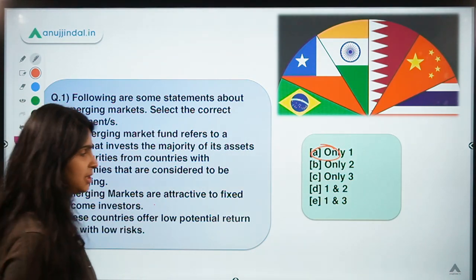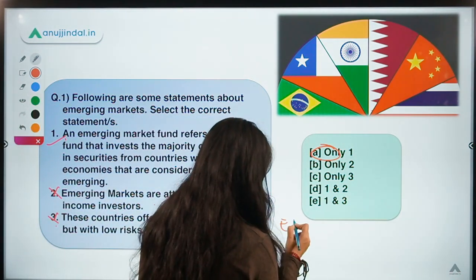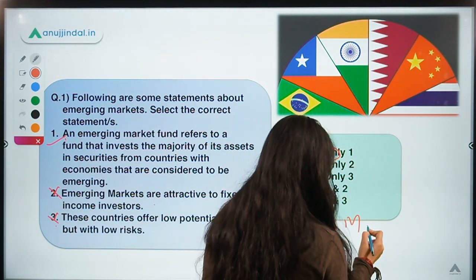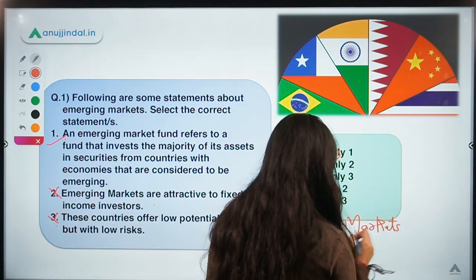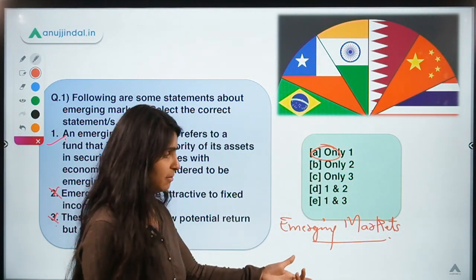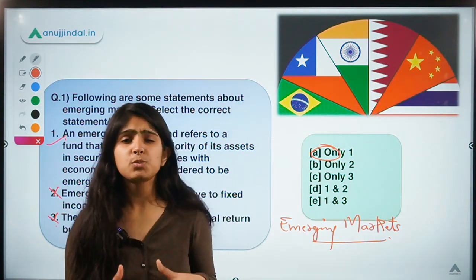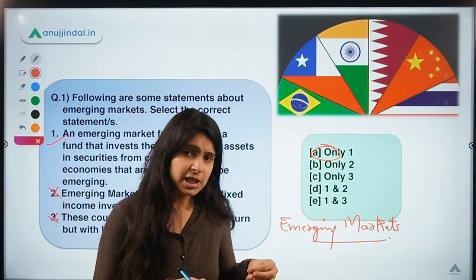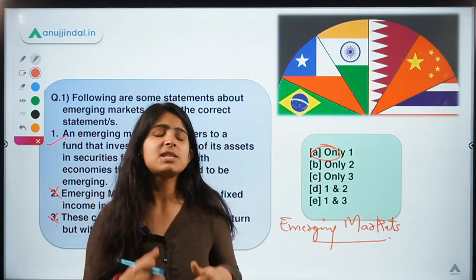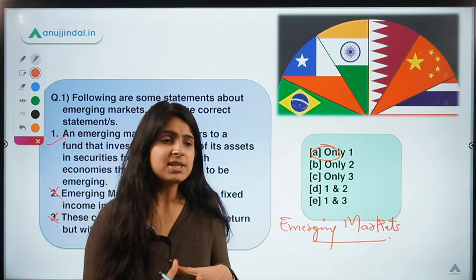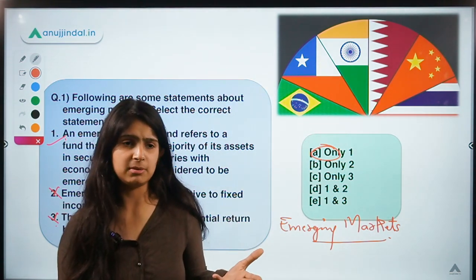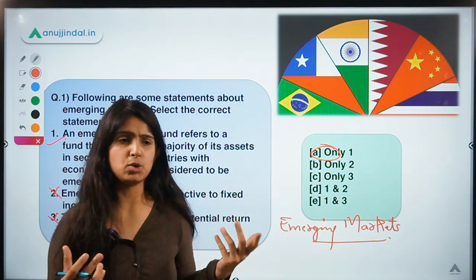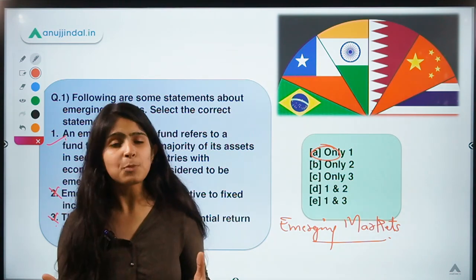We need to understand what emerging markets are and how they differ from other countries. In simple terms, emerging markets refers to those countries which have a huge potential for growth — they have not attained their full potential and have not yet become fully developed. Advanced countries like Germany, USA, or UK do not have much potential for growth because they have already seen a lot of growth in the past.